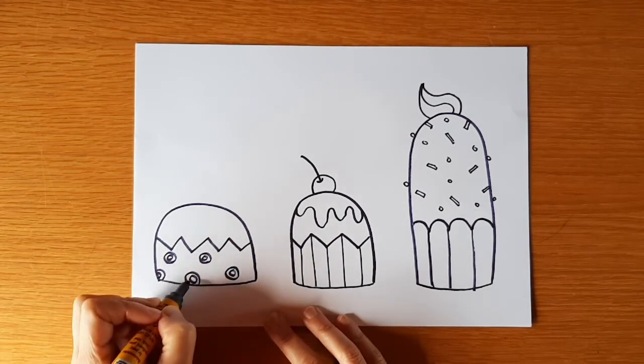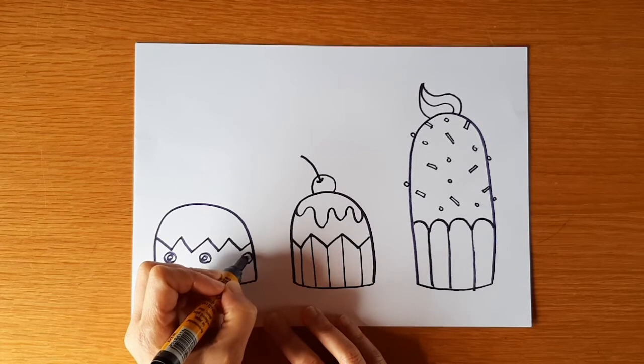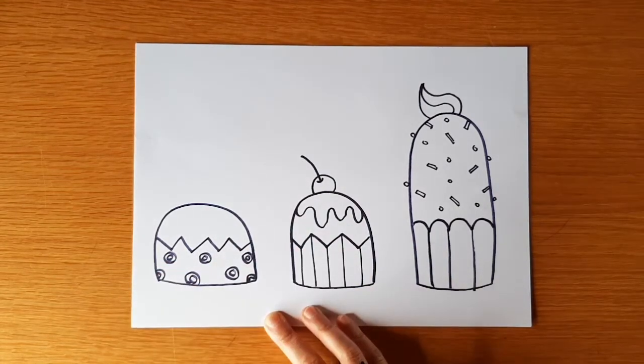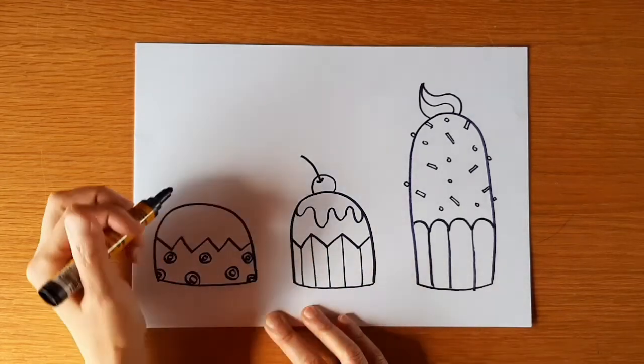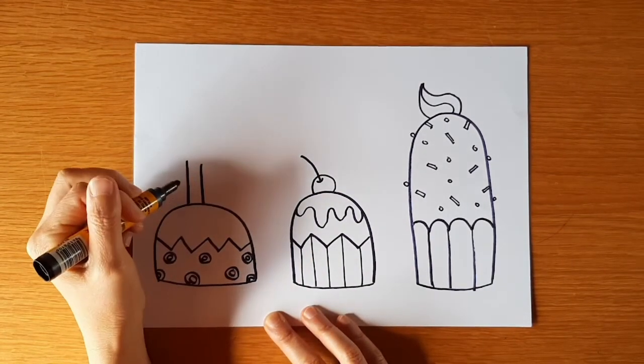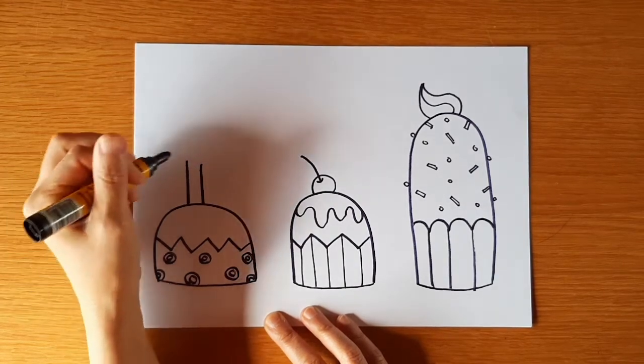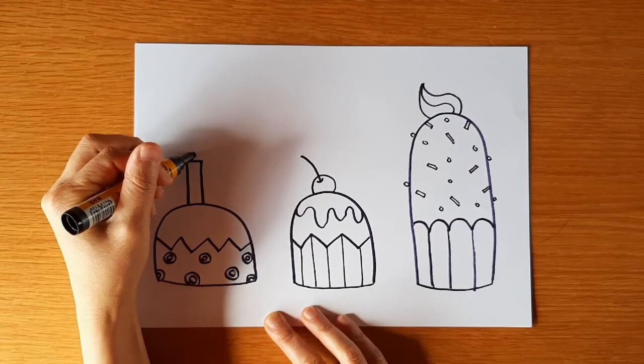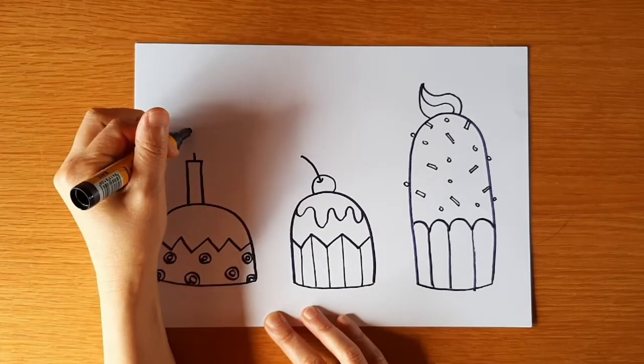I think we should turn this one into a birthday cupcake. Draw two straight lines on top of the cupcake. And draw a side way line to join the top. A little line for the wick. And a raindrop for the flame.